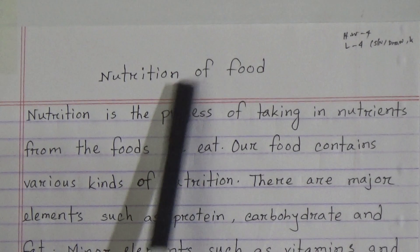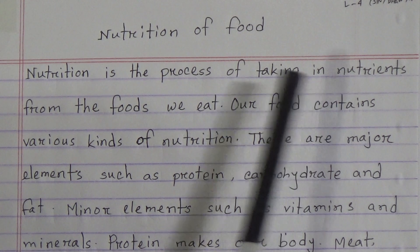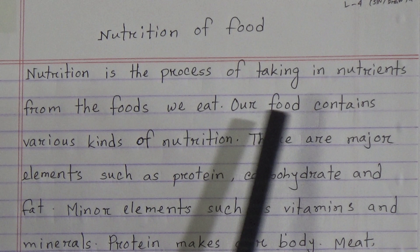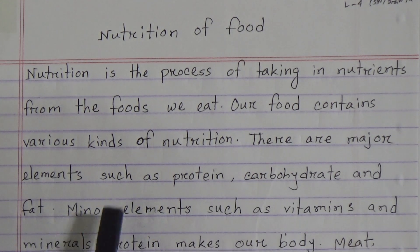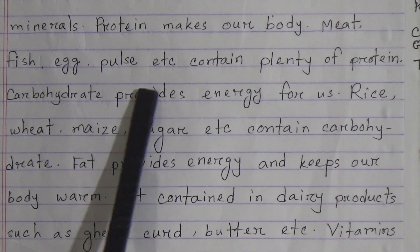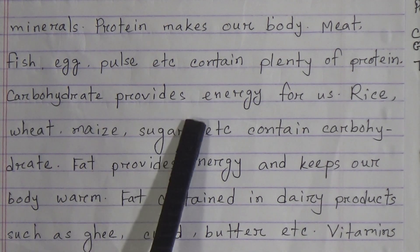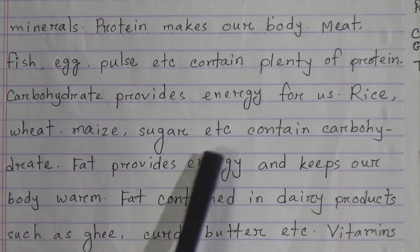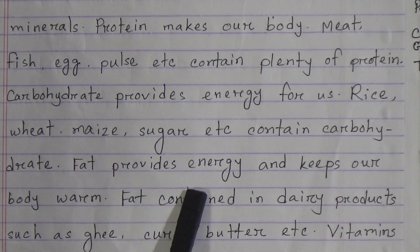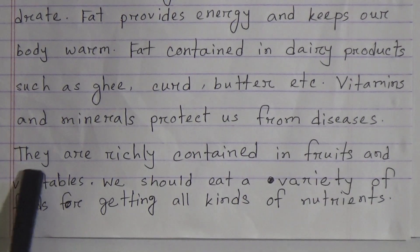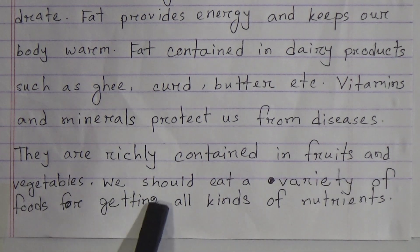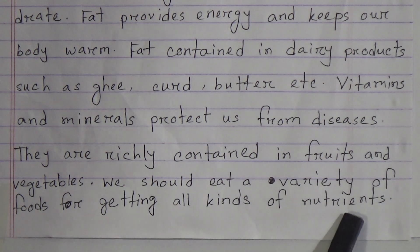Now I am repeating the short note. Nutrition of Food: Nutrition is the process of taking in nutrients from the foods we eat. Our food contains various kinds of nutrition. Major elements are protein, carbohydrate, and fat. Minor elements are vitamins and minerals. Protein makes our body. Meat, fish, egg, and pulse contain plenty of protein. Carbohydrate provides energy. Rice, wheat, maize, and sugar contain carbohydrate. Fat provides energy and keeps our body warm. Fat is contained in dairy products such as ghee, curd, and butter. Vitamins and minerals protect us from diseases, and they are richly contained in fruits and vegetables. We should eat a variety of foods for getting all kinds of nutrients.